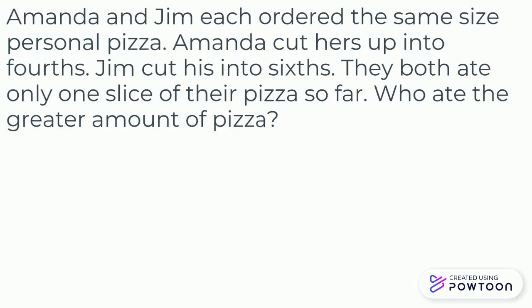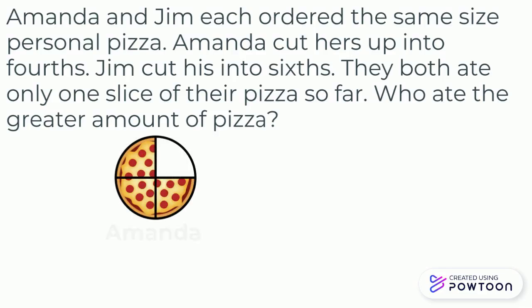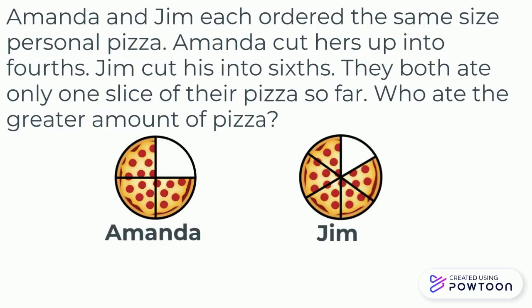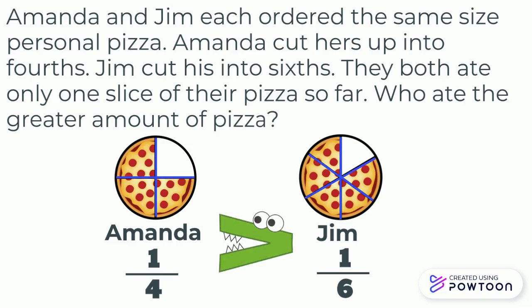First, draw Amanda's pizza cut up into fourths. Then, draw Jim's pizza cut up into sixths. The missing pieces represent the amount they've eaten so far. If we look at these pizzas, we can see that Amanda has eaten more than Jim. Amanda cut her pizza up into fewer pieces that are bigger than Jim's. We can read this comparison sentence as: one-fourth is greater than one-sixth.